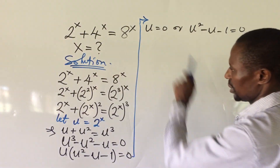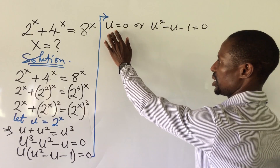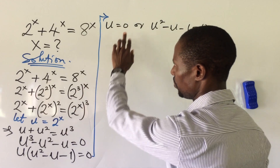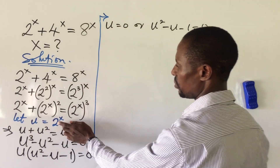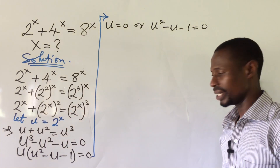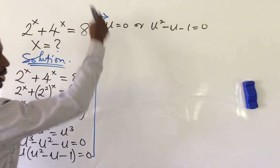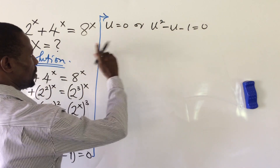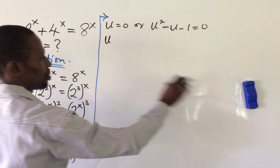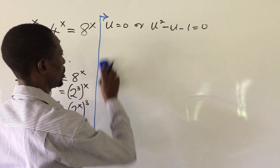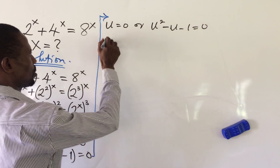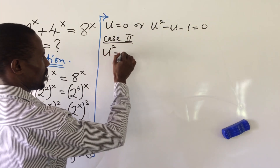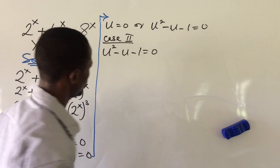We equate each factor to 0. From the first part, u equals 0. But recall we said u equals 2 to the power of x — if we put 0 in place of u, there is no solution, so we discard this. We take the second part: case 2 says u squared minus u minus 1 equals 0.